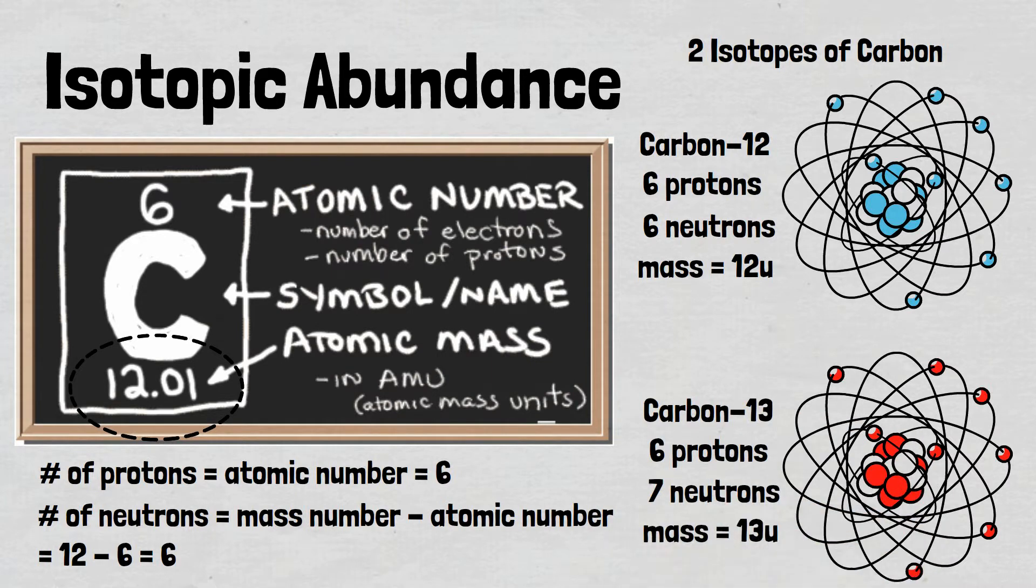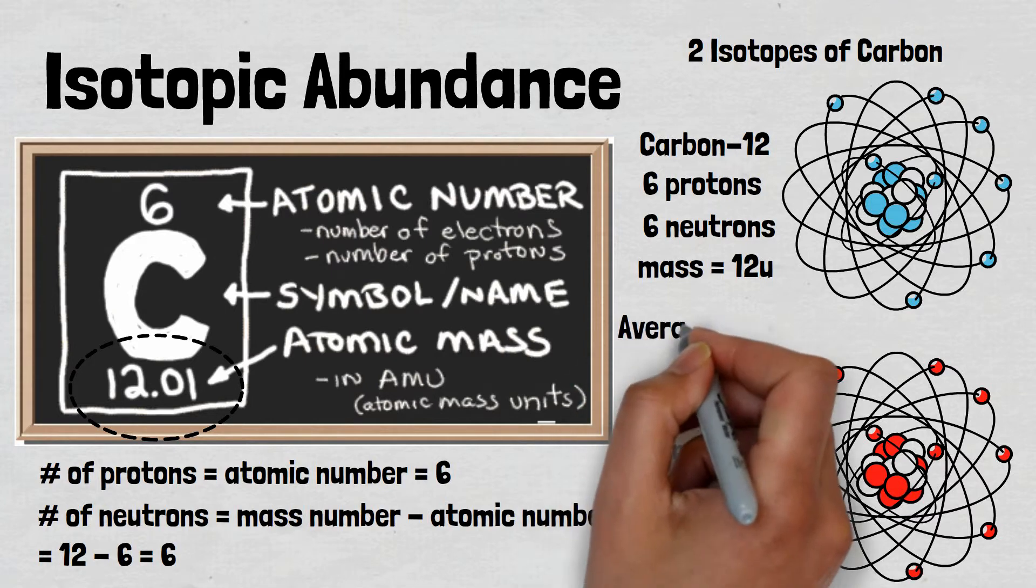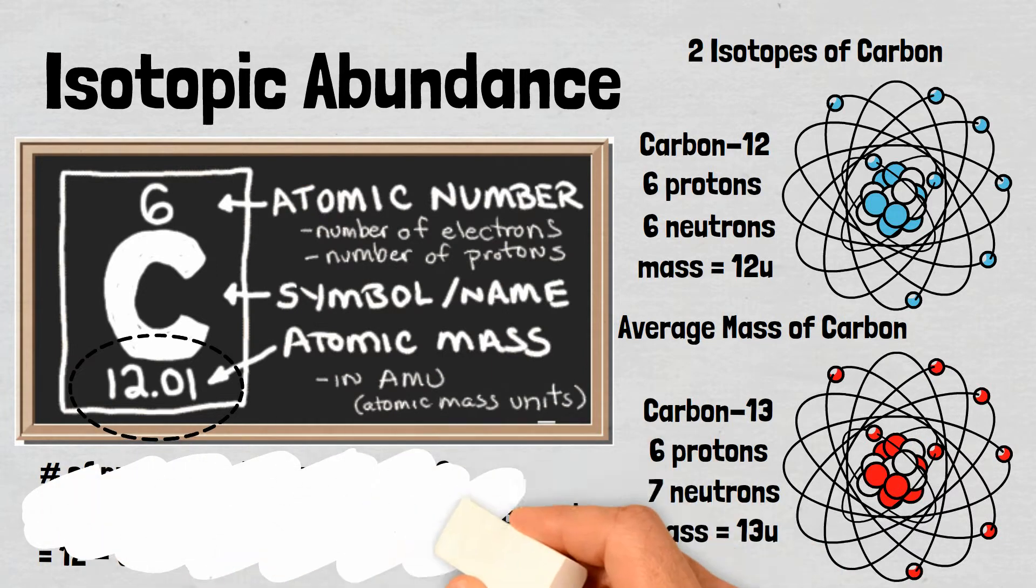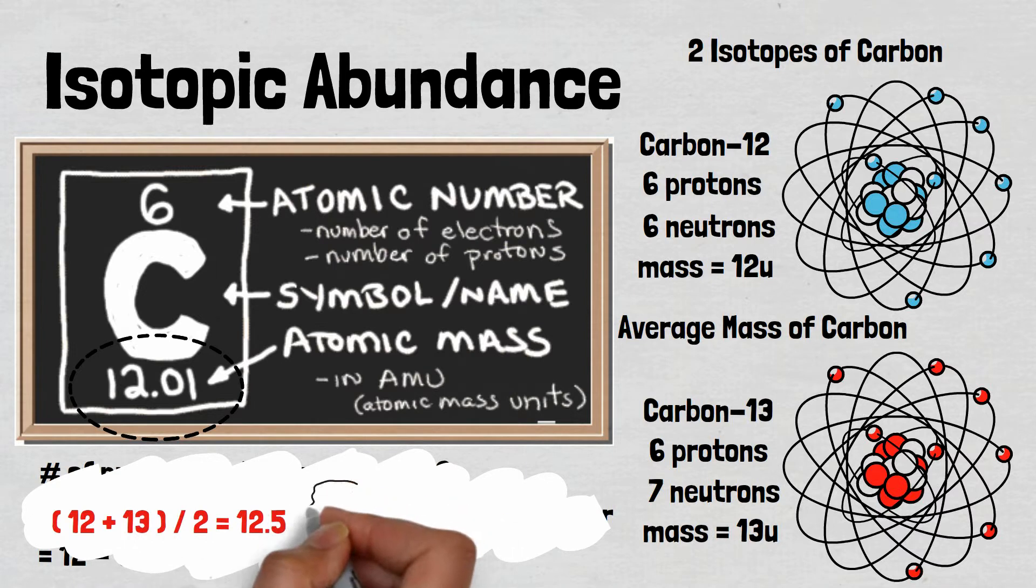Carbon-13 has 7 neutrons, not 6, and so has a mass of 13 atomic units. To find the average mass, we can't simply add the mass of each and divide by 2. The atomic mass of carbon is not 12.5.